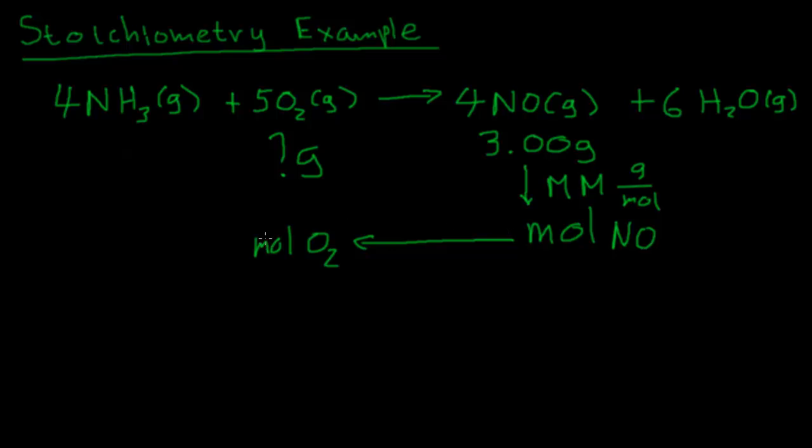We know the answer from this chemical equation. How do I convert from moles of NO to moles of O2? Right here it tells us that for every four moles of NO, I have five moles of O2. So I can use that stoichiometric ratio. There's a four NO to five O2 ratio to convert from moles of NO to moles of O2.